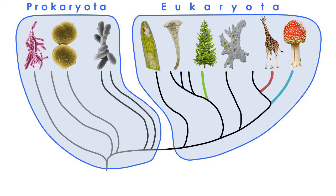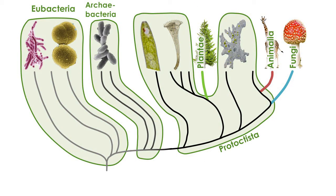Welcome to the second part of my introduction to biodiversity. In the last video, I mentioned that life is divided into prokaryotes and eukaryotes. I showed you that all of life is classified into six kingdoms, and I talked a bit about the two kingdoms of the prokaryotes. In this video, I want to give you a brief tour of the four kingdoms of the eukaryotes.